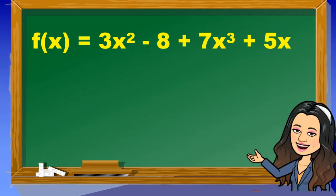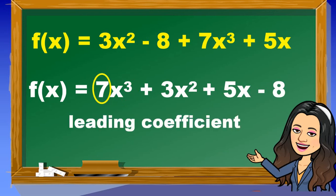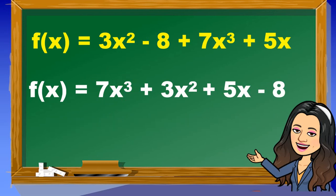Given f(x) = 3x² - 8 + 7x³ + 5x, this is an example of a polynomial function. Observe that the polynomial is not written in descending powers of x, or it's not written in standard form. If we rearrange the order and rewrite this in standard form, this is equal to f(x) = 7x³ + 3x² + 5x - 8. In this function, the leading term is 7x³, the leading coefficient is 7, the degree of the polynomial is 3, and the constant term is negative 8.